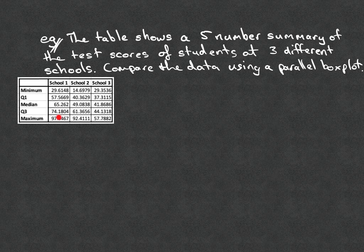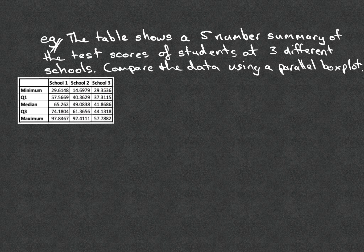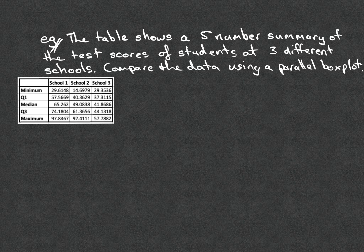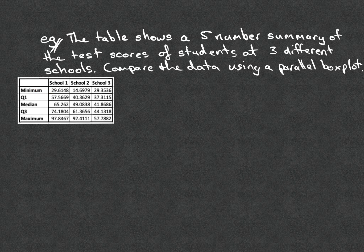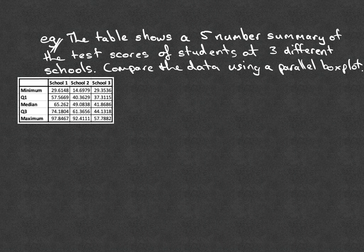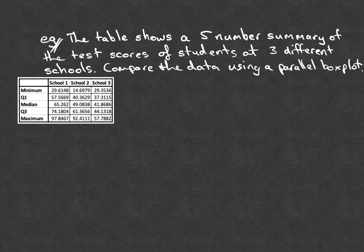In the first column we've got School 1, second column School 2, and third column School 3. And for each school we've got the minimum test score, the first quartile, the median test score, the third quartile, and the maximum test score for that school.